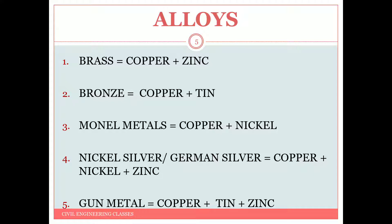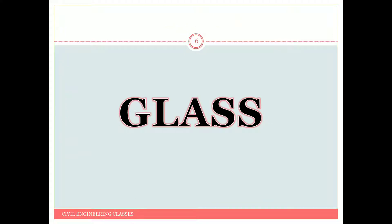Gun metal is an alloy of copper with tin and zinc. These are the different alloys of non-ferrous metals. In the previous video we also saw alloys of steel: manganese steel used in railway crossings, nickel steel used for high-precision instruments and pendulum clocks, and vanadium steel used for making springs.